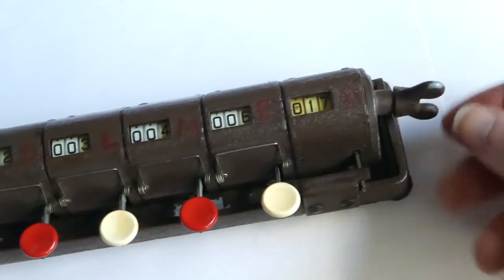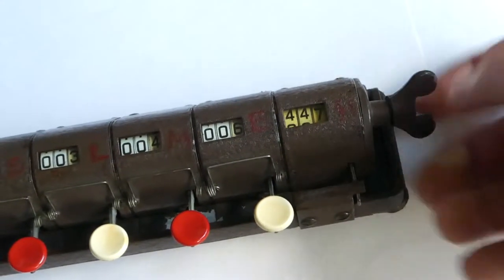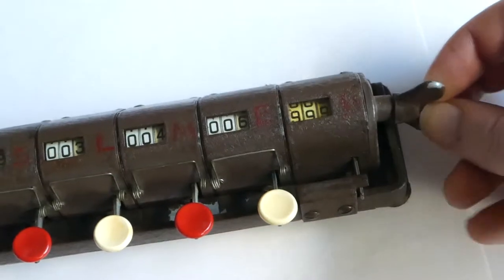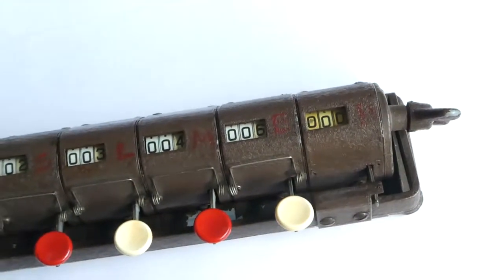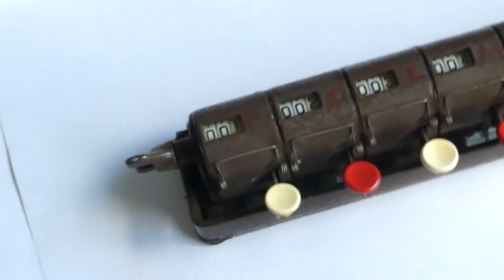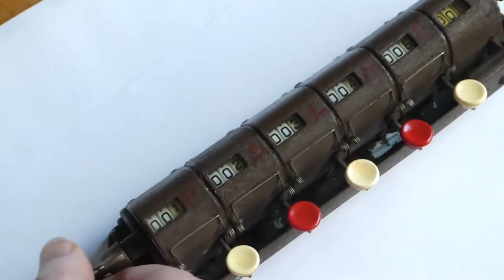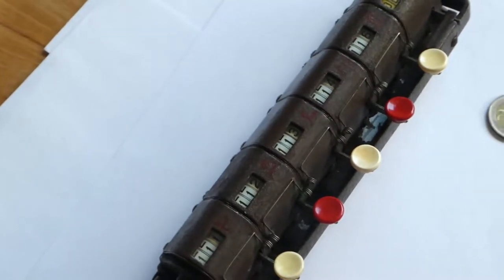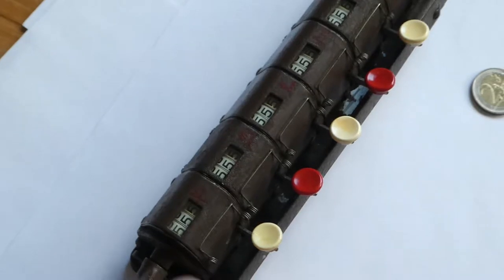This wing nut at the end, that's the clearing mechanism. You have to turn it to zero like that. The wing nut at the other end, that's the clearing mechanism for all five counters at the same time.